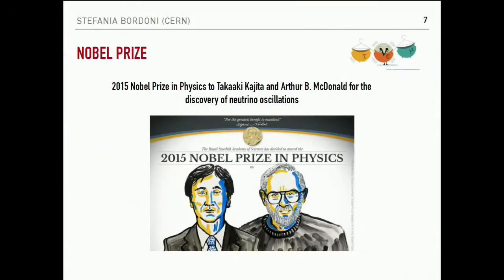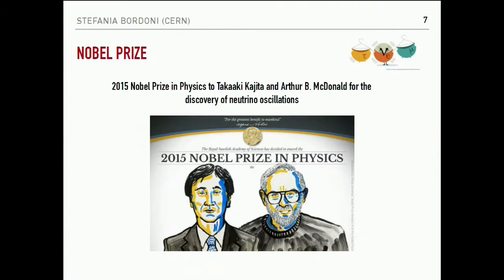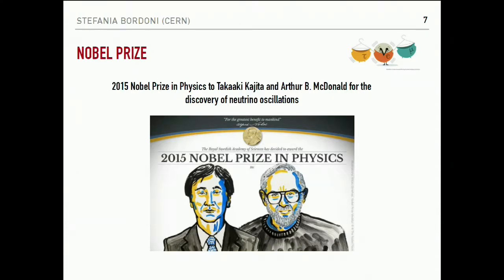With these two main experimental results — Super-Kamiokande atmospheric and SNO solar — the clear discovery of neutrino oscillations was established. A Nobel Prize was given to the spokespersons of these two main experiments in 2015.